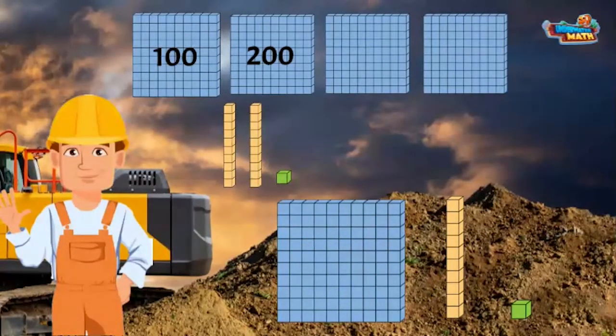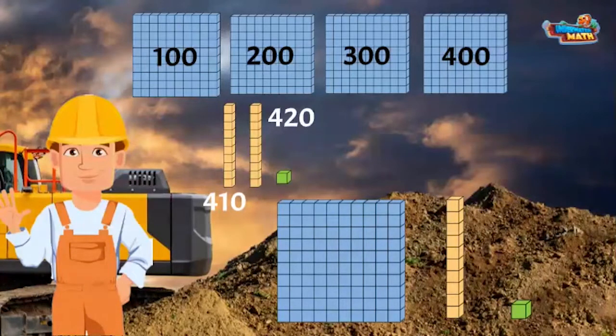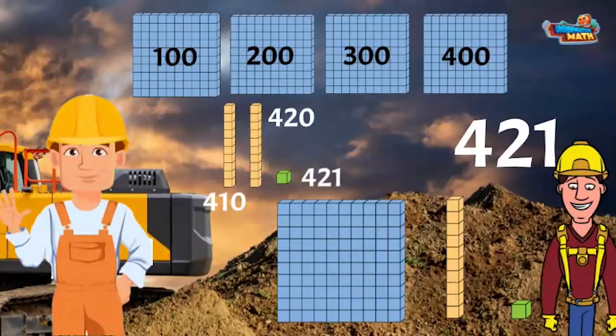100, 200, 300, 400. The longs by 10: 410, 420. And the cube by 1: 421. Larry, 421. Thanks, Bob!